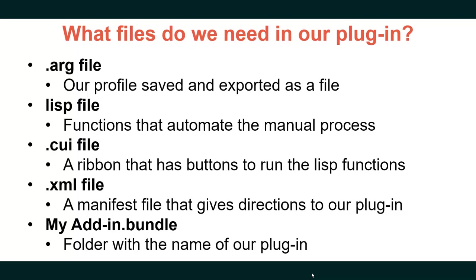The CUI file will be our ribbon menu with buttons that run the LISP files to switch profiles. We need an XML file because a bundle requires it — it is the manifest file that tells our plugin what LISPs and menus to load and when to load them at startup. And we will need a MyAddIn.bundle folder with the name of our plugin.